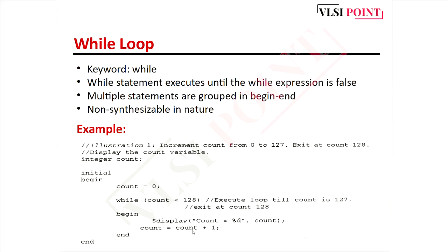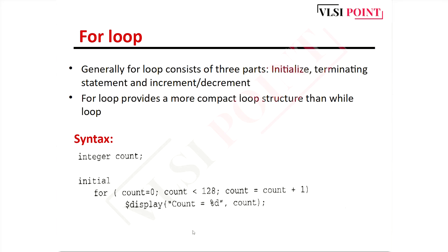The for loop consists of three parts: initialization, termination condition, and increment/decrement. It provides a more compact loop structure than the while loop. The syntax is: for (initialization; termination; increment/decrement) followed by the statement. In the example, the value is incremented by one each iteration.